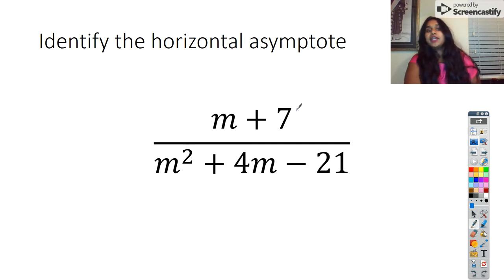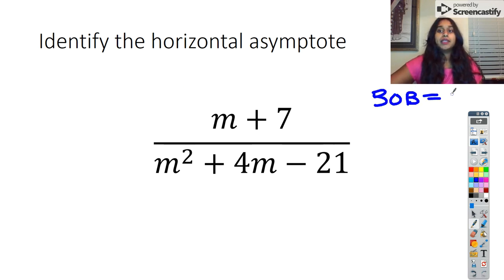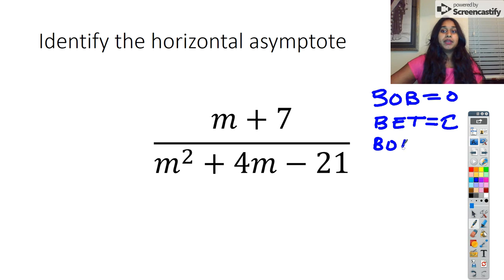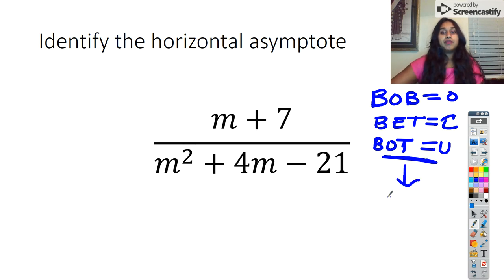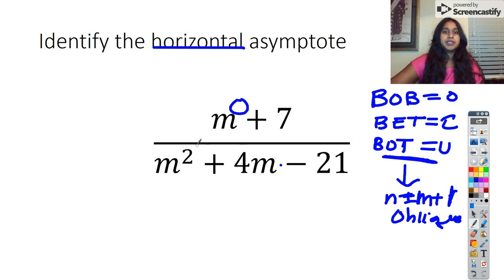Our horizontal asymptote. For this, I don't even have to factor. I use three little concepts. Bigger on bottom means the horizontal asymptote equals zero. If exponents are equal, I use the leading coefficients. If bigger on top, there is no horizontal asymptote — unless the numerator's degree is exactly one more than the denominator's, in which case we have an oblique asymptote. Here, the bottom exponent of 2 is greater than 1 on top, so I have a horizontal asymptote at y equals zero.